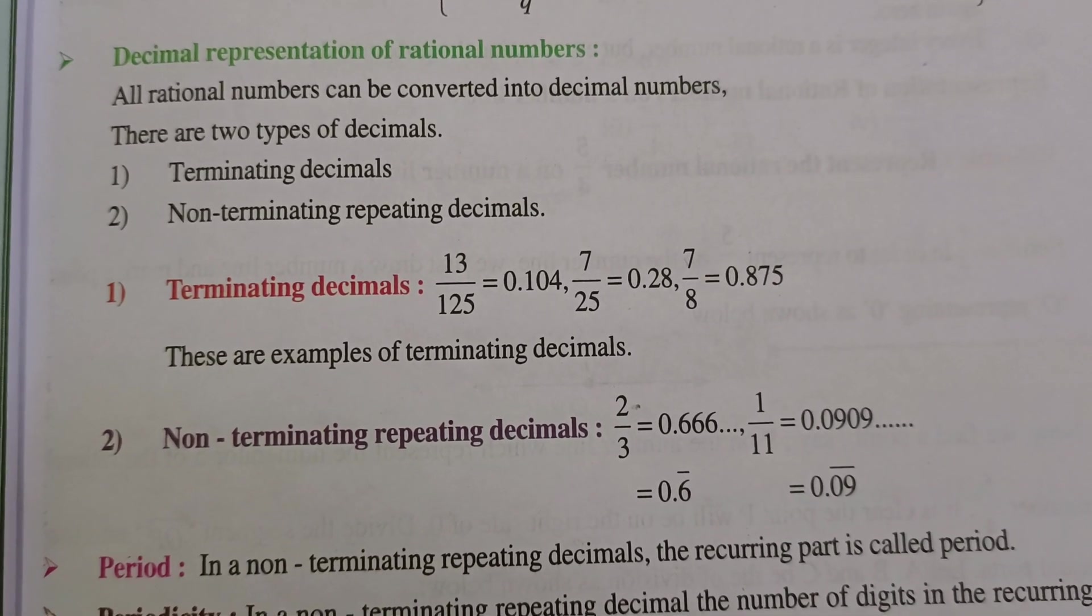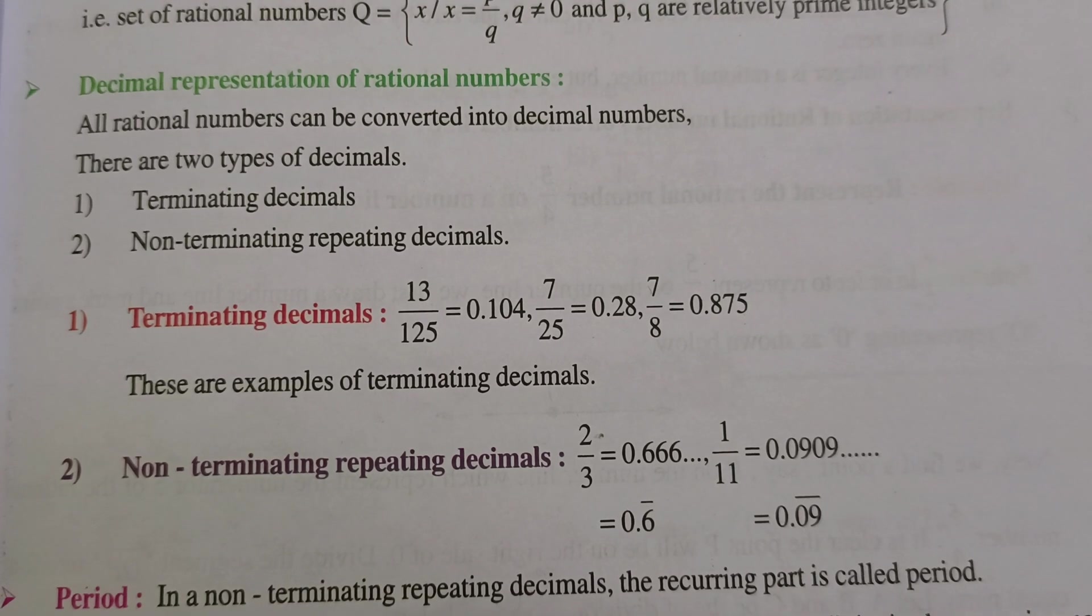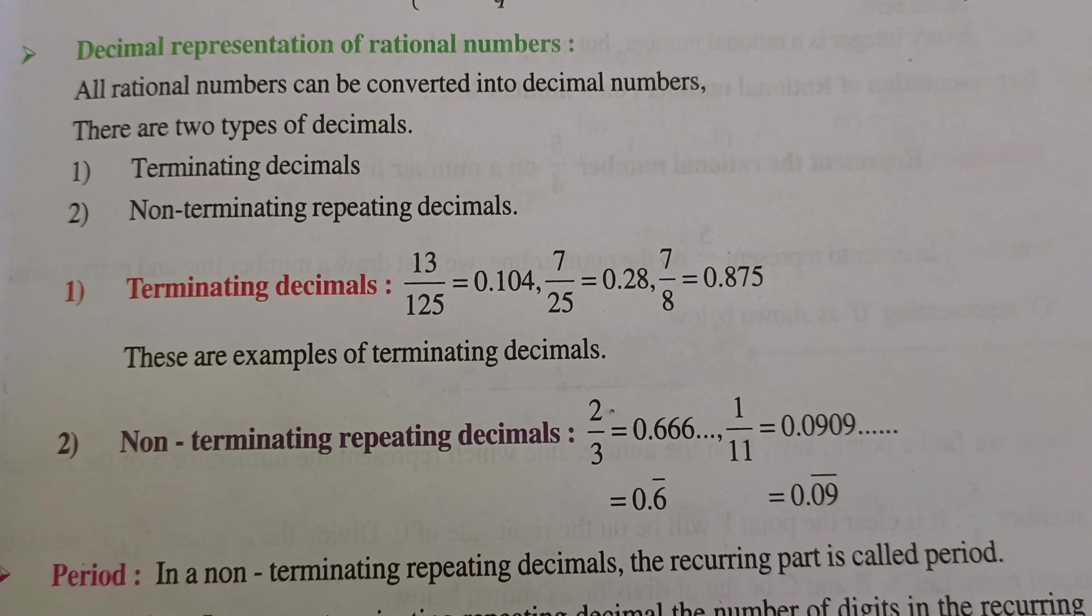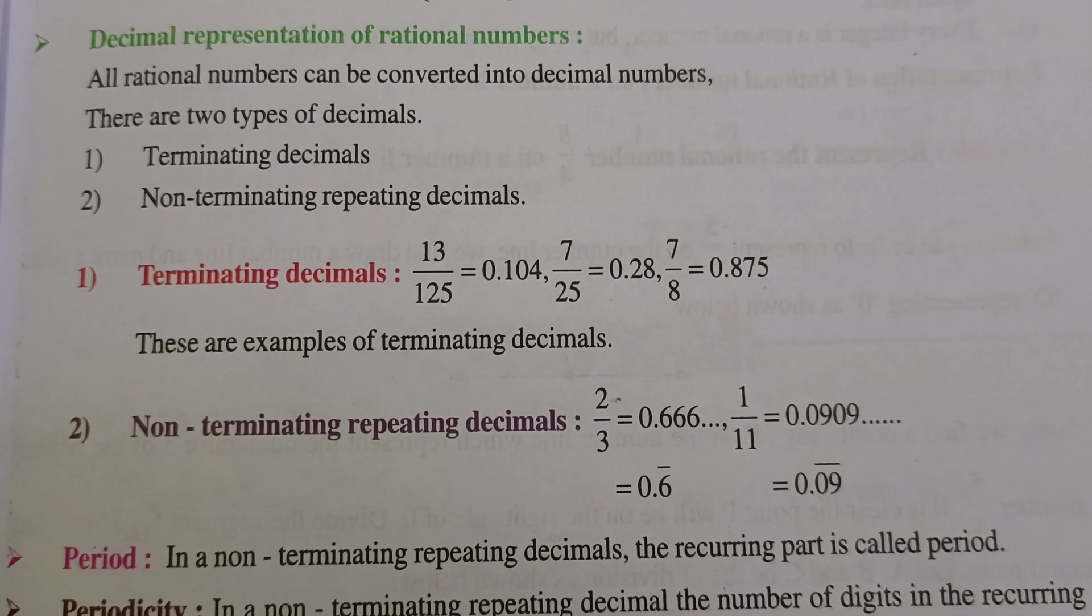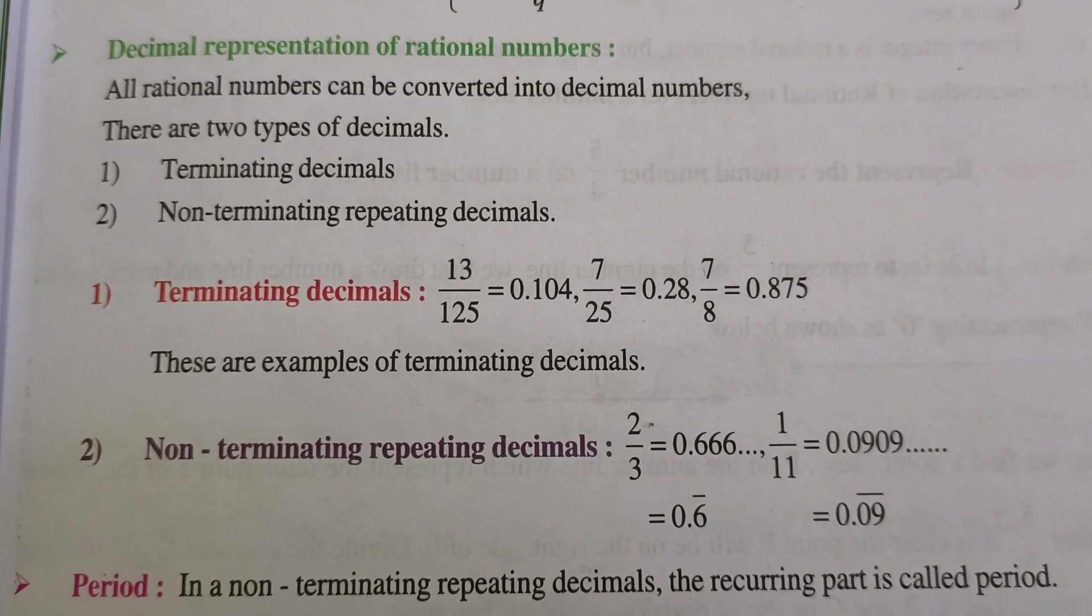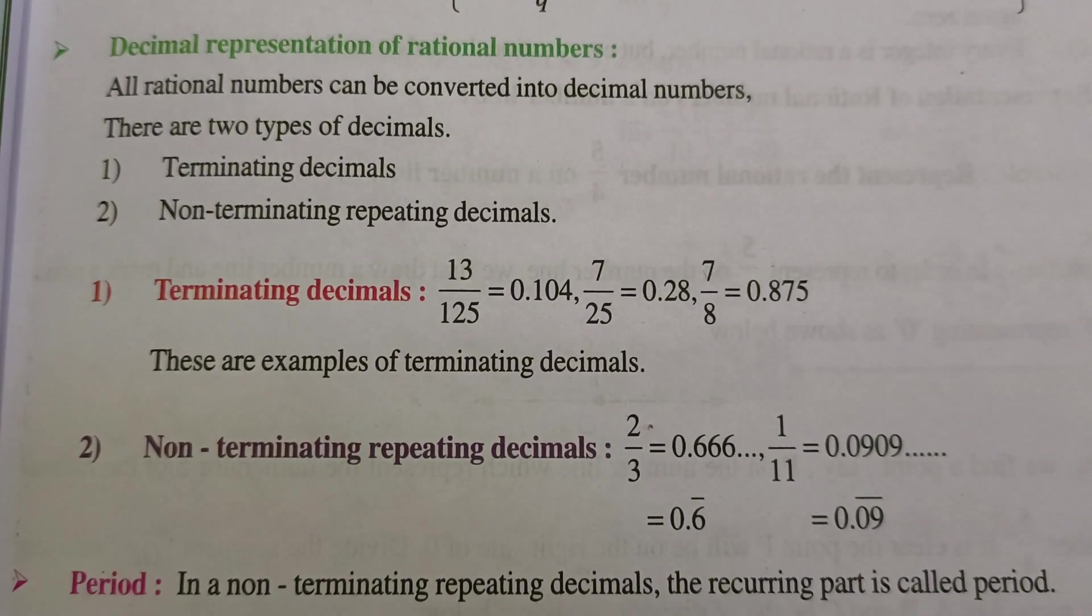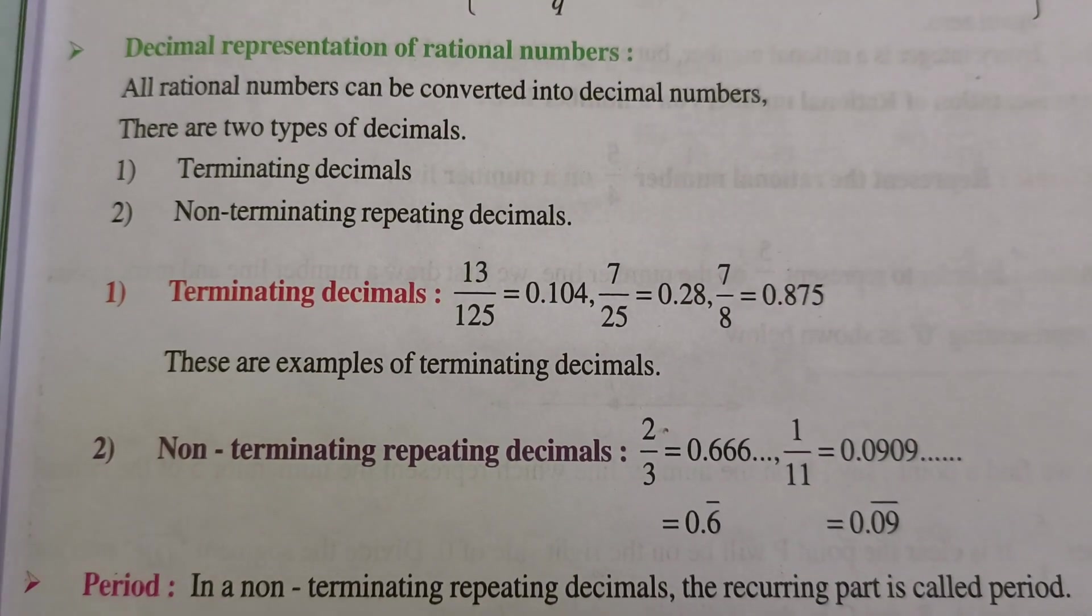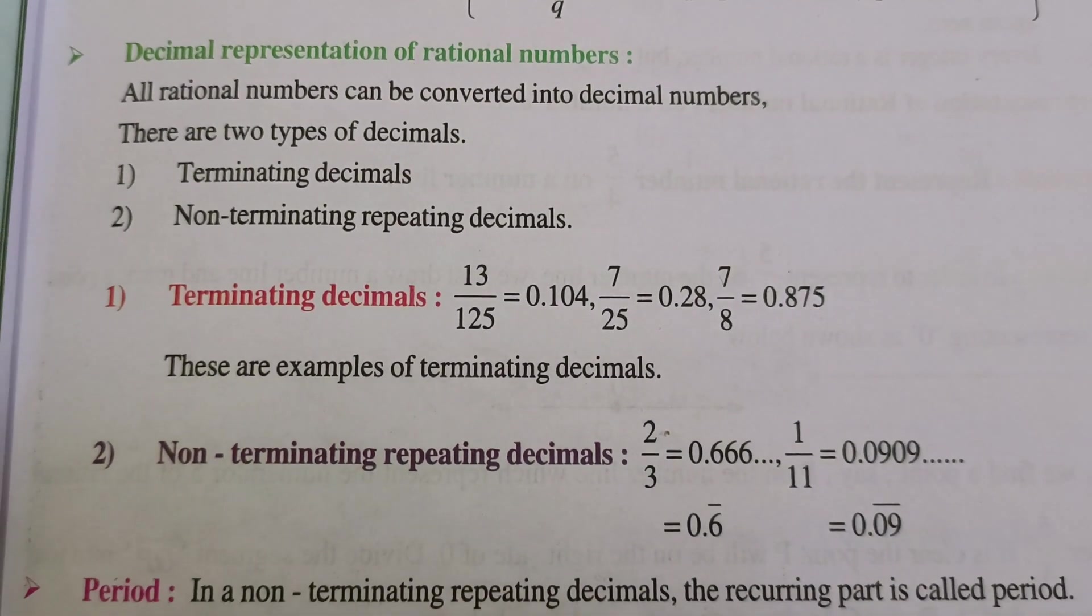Type 1: Terminating decimals. Type 2: Non-terminating repeating decimals. Terminating decimals examples: 13 by 125 equals 0.104, 7 by 25 equals 0.28, 7 by 8 equals 0.875. These are examples of terminating decimals.